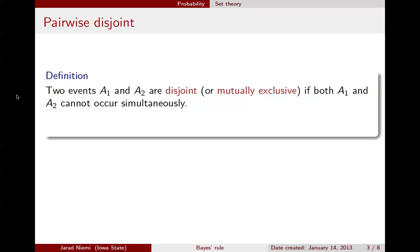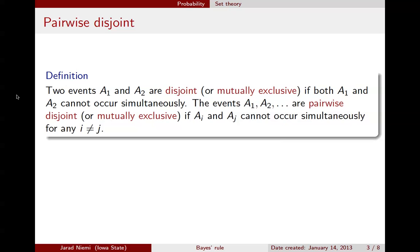The next definition is that for disjoint. Two events A1 and A2 are disjoint if both A1 and A2 cannot occur simultaneously. A set of events, possibly infinite, A1, A2, A3, and so forth, are pairwise disjoint if A_i and A_j cannot occur simultaneously for any subscript i and j, where i and j are not equal to each other.